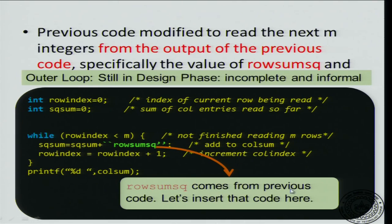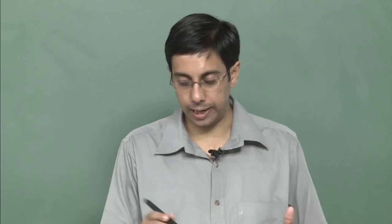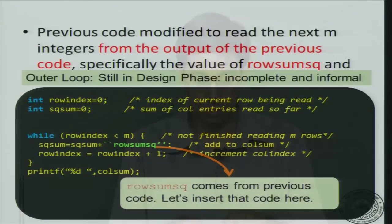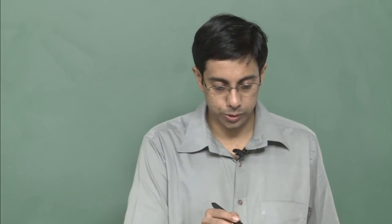For each row, you end up with a row sum squared, and you have to add all those row sum squares together. The row sum squared comes from the inner loop code. This is how we visualize the outer loop. Note that this is not completely specified code — instead of a literal row sum squared value, it should come from the inner loop which actually calculates it. We plug the inner loop output into the outer loop.